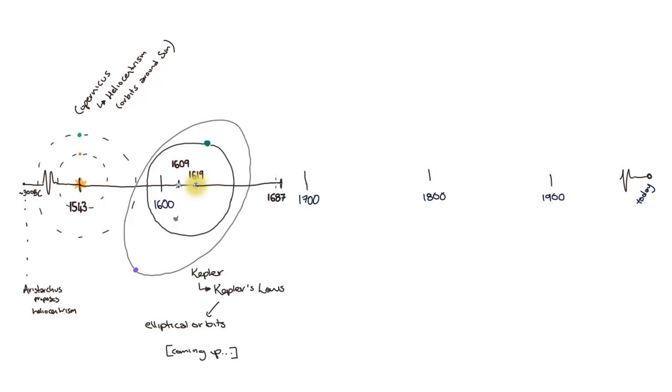It was almost 70 years later, in 1687, that Newton proposed his law of universal gravitation, which described the forces that result in planetary orbits. This one law explained all of Kepler's laws.